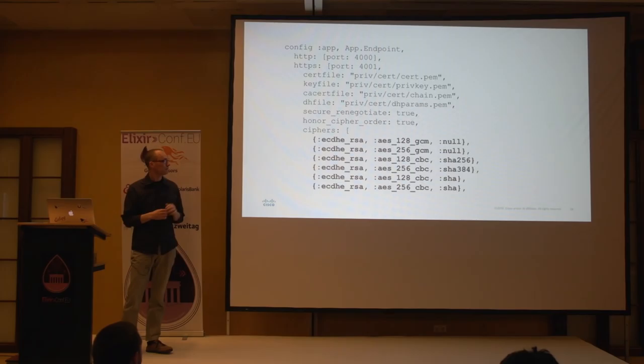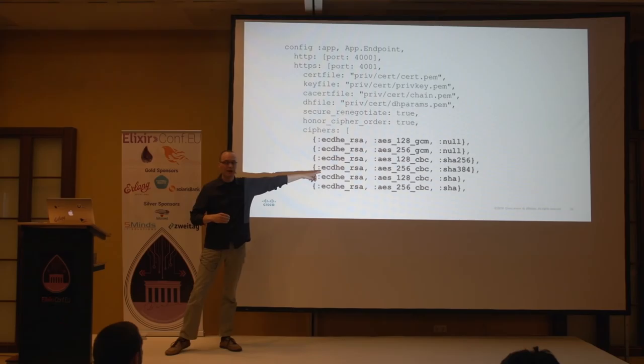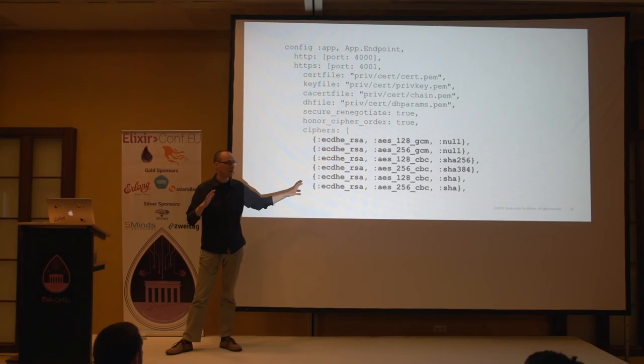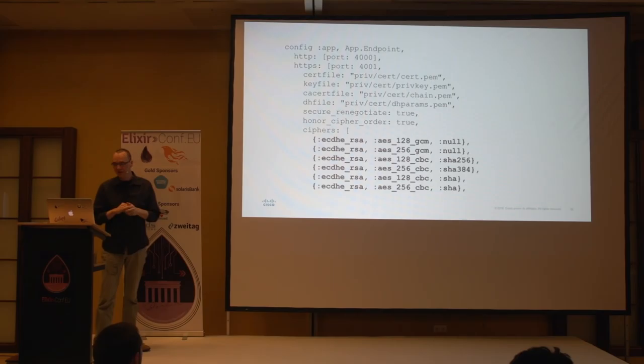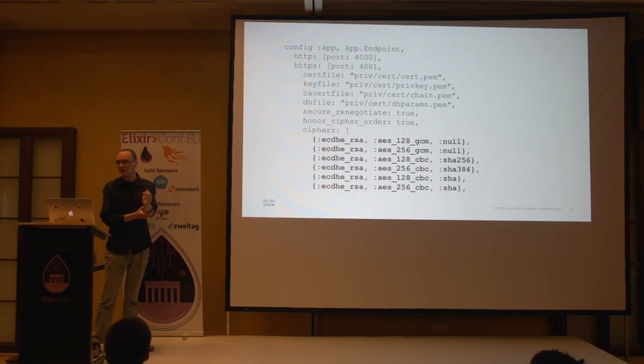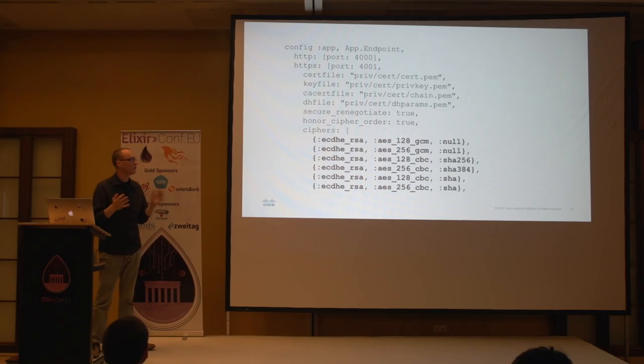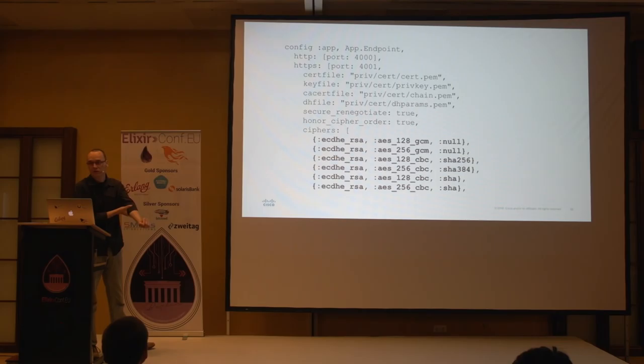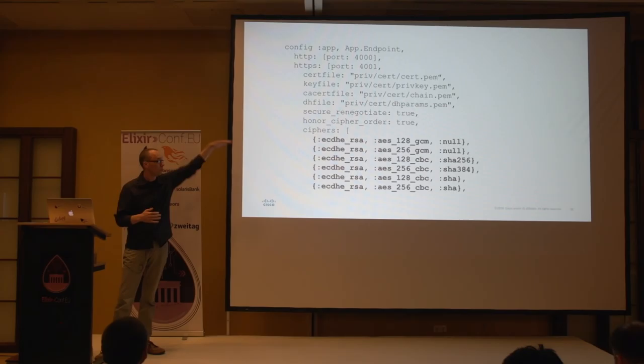You want elliptic curve Diffie-Hellman exchange at the top, and below that the traditional Diffie-Hellman exchange, which is more expensive. If you're watching from the future on YouTube: there's a new cipher called ChaCha20, already supported in Erlang version 18 and later, but it requires OpenSSL 1.1 which was still in beta at the time. ChaCha20 is a stream cipher providing pretty much the same security as AES at a lower computational cost — more efficient. Once available, put those at the top.